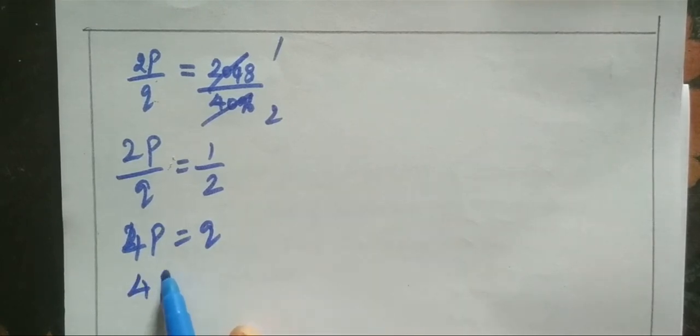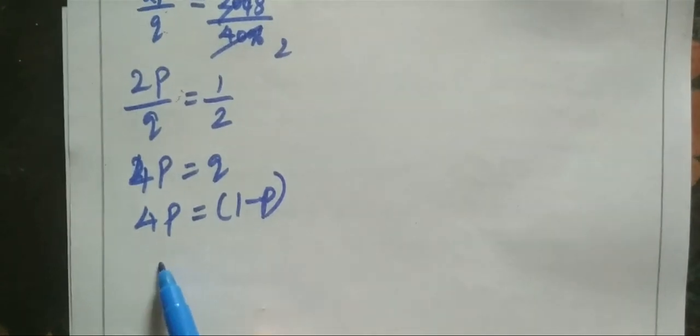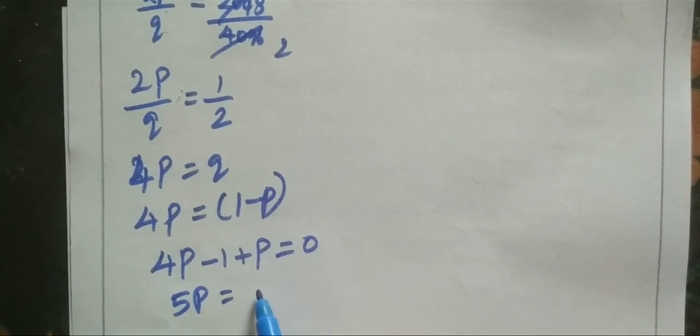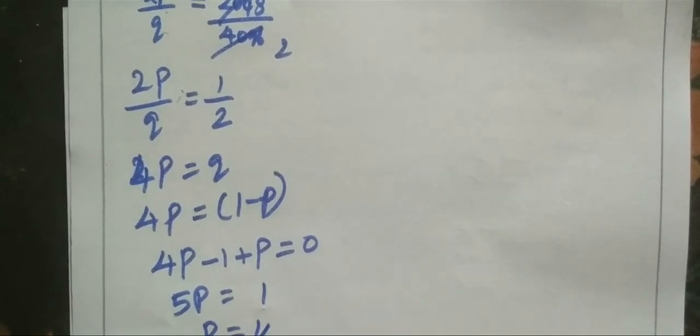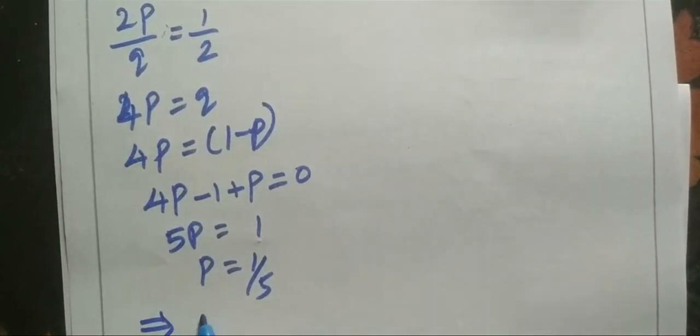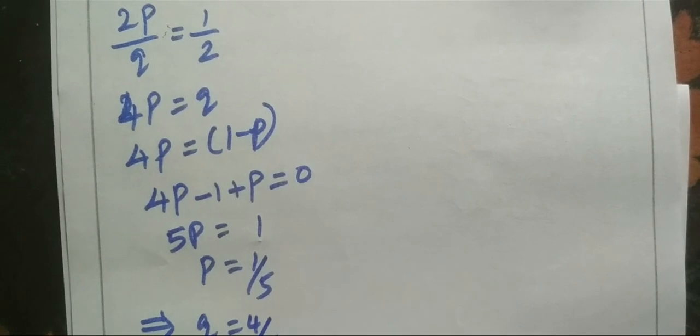Cross multiply: 4p equals q. How does q mean? 1 minus p. So, 4p equals 1 minus p. 4p plus p on one side equals 1. That is 5p equals 1. Therefore, p equals 1 by 5. Which implies q value is 4 by 5.